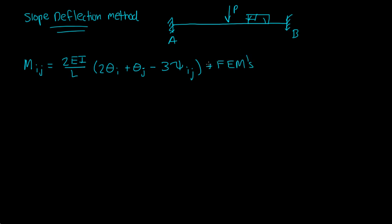Right? And I and J basically they correspond to the ends of the member. So in this case we had member AB.